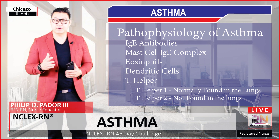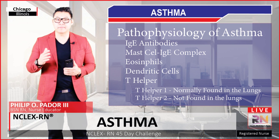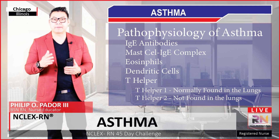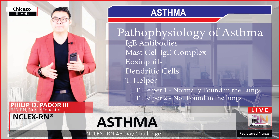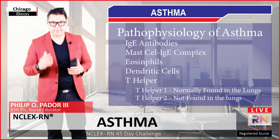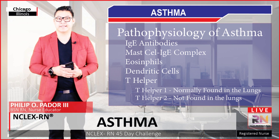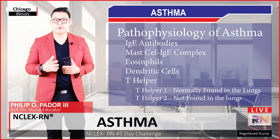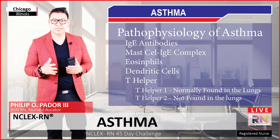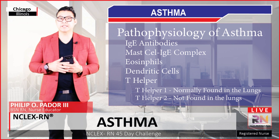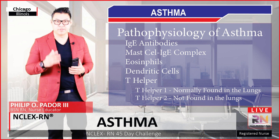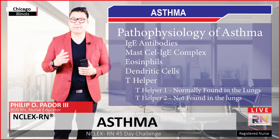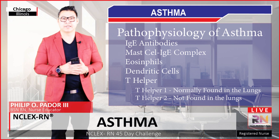T-helper 1 normally promotes inflammation by increasing cell-mediated immunity. However, T-helper 2 cells promote inflammation by increasing humoral immunity — so promoting antibody production.